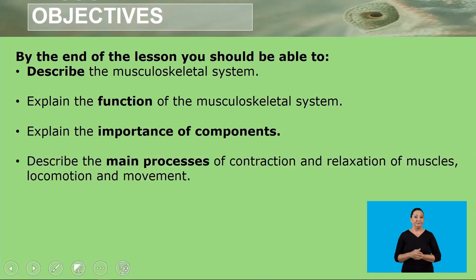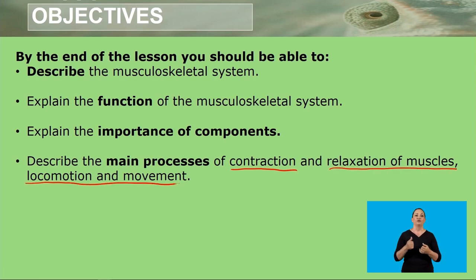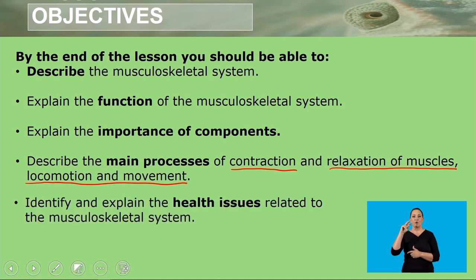Describe the main processes which include contraction, the relaxation of muscles, and locomotion and movement. And lastly, you should be able to identify and explain the health issues related to the musculoskeletal system.